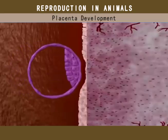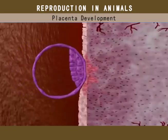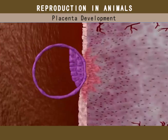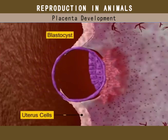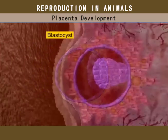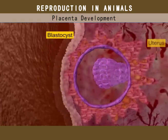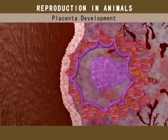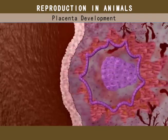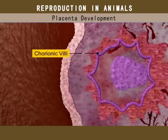After implantation, the trophoblast grows further, causing the blastocyst to sink in and be covered by cells of the uterus. Meanwhile, finger-like projections called chorionic villi appear on the trophoblast.